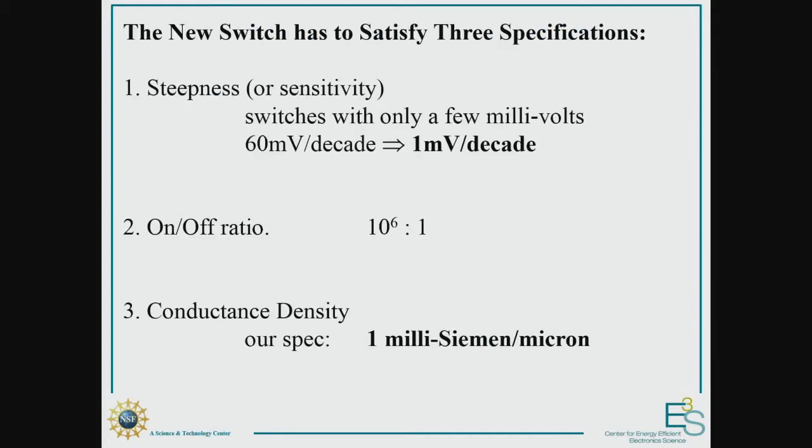orders of magnitude in power if we can find a more sensitive switch. But sensitivity is not enough. We also need a very high on-off ratio of about 10 to the 6. And the third requirement is that in order to drive the transmission lines in our integrated circuits and keep the RCE time of our signals low enough, we also need a certain on-state conductance. A good value would be 1 millisiemen per micron of the device.